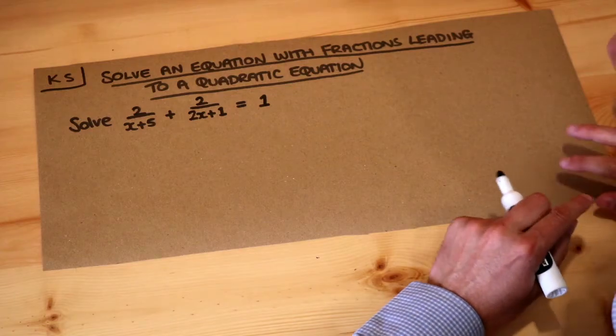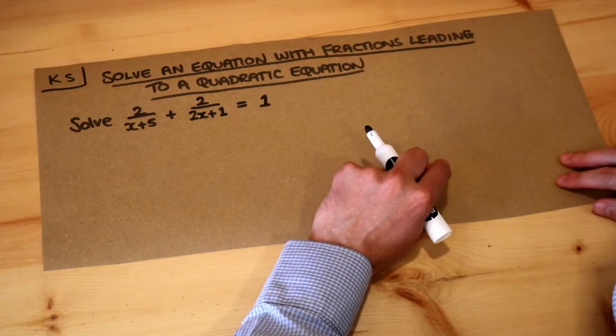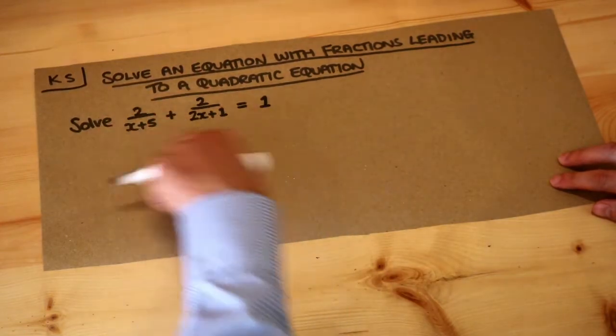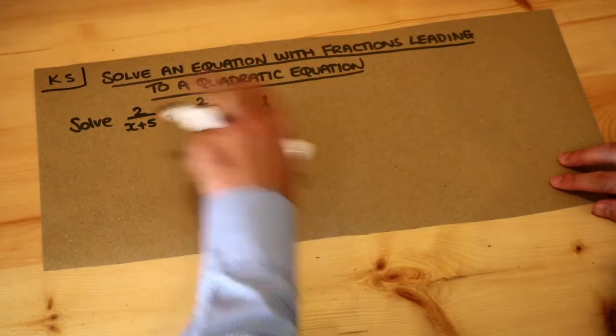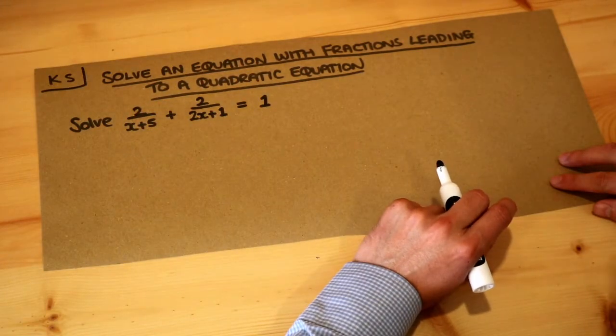In previous videos we looked at how we could add together algebraic fractions, and whenever you see an equation where you've got algebraic fractions added or subtracted, you should always combine them into a single fraction first.